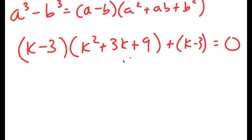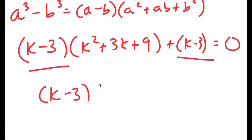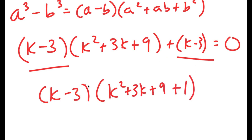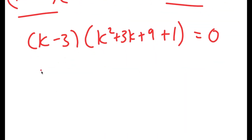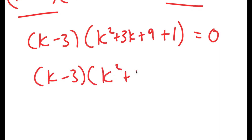Now, because both of these terms have k minus 3 in them, I can factor out k minus 3. So I get k minus 3 times k squared plus 3k plus 9 plus 1 — because k minus 3 divided by k minus 3 is 1 — is equal to 0. So this gives k minus 3 times k squared plus 3k plus 10 is equal to 0.